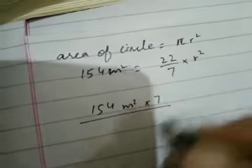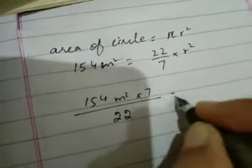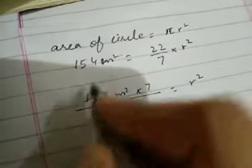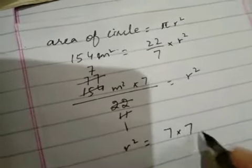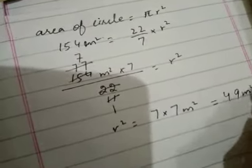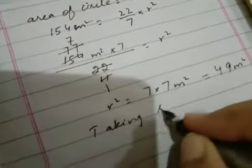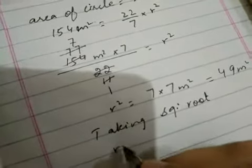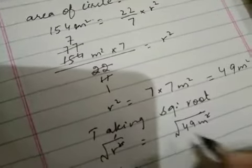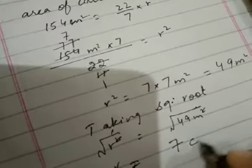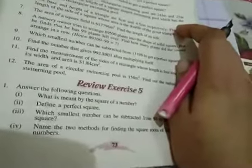Dividing: 154 × 7 ÷ 22 gives r² = 7 × 7 = 49 meter square. Taking the square root of both sides, the square root of 49 is 7, so r equals 7 meters. Seven meters is the answer. We have now completed Exercise 5.4. You have to do it in your own notebook by yourself.